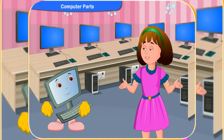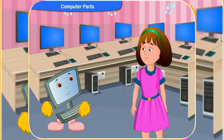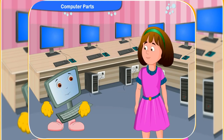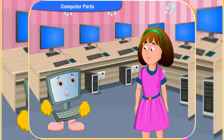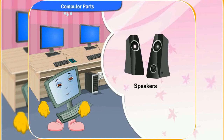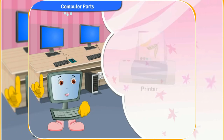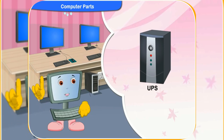I have seen Uncle Ravi's computer. He has a lot of other things attached to the computer, beside the mouse, keyboard or the CPU. What are those, Clicko? Yes, Rennie. You can add other parts to a computer if you require. Some of them are speakers, printers, joysticks and UPS. These parts are called a computer's peripheral devices.